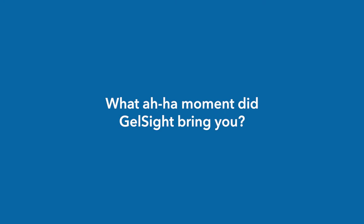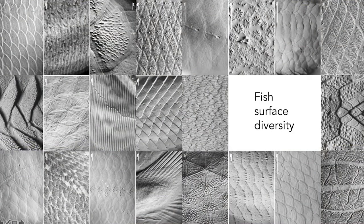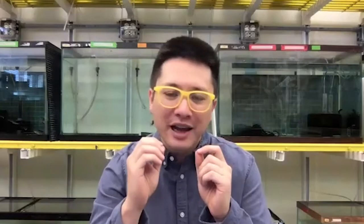GelSight solves these problems. Being able to see all the features of fish scales represented in 3D — the diversity of fish scales never ceases to amaze. Just being able to see the topography of fish surfaces in 3D has really let me lead my field into unknown territory, allowing me to spark a number of discoveries about what fish surfaces look like and also how they work.